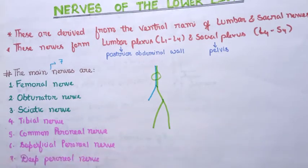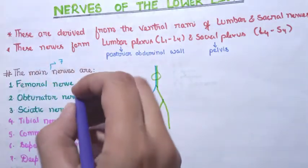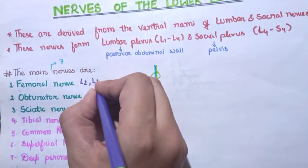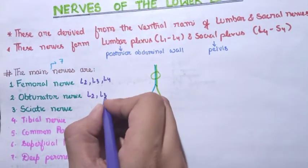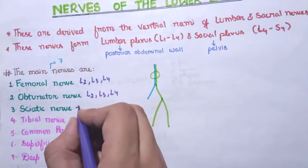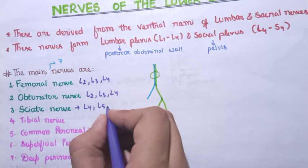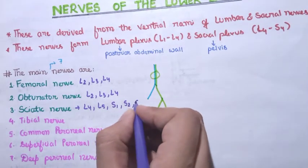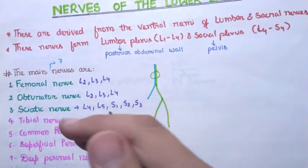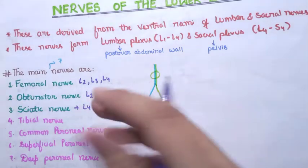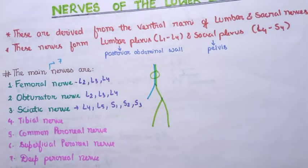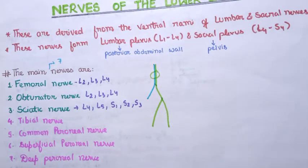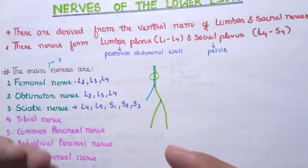One important thing you must know is the root value. The femoral nerve has a root value of L2, L3, L4. The obturator nerve has the same root value: L2, L3, L4. The sciatic nerve has a root value of L4, L5, S1, S2, S3. The root values of the other branches of the sciatic nerve will be discussed when we cover each nerve in detail. So remember: femoral nerve — L2, L3, L4; obturator nerve — L2, L3, L4; sciatic nerve — L4, L5, S1, S2, S3.